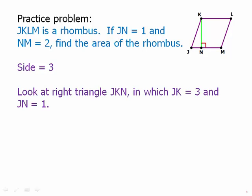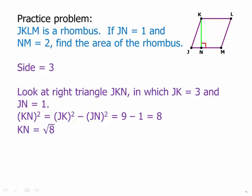Now look at the right triangle JKN, in which JK, the side of the rhombus, is 3, and JN we're given as 1. We use the Pythagorean theorem in that triangle to find KN. KN squared equals JK squared minus JN squared. Three squared is 9, so 9 minus 1 is 8, which means that KN is the square root of 8. Of course, we can simplify that down to 2√2, and that is the height of the rhombus.